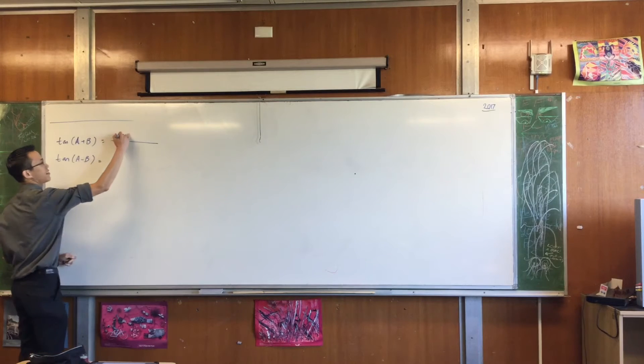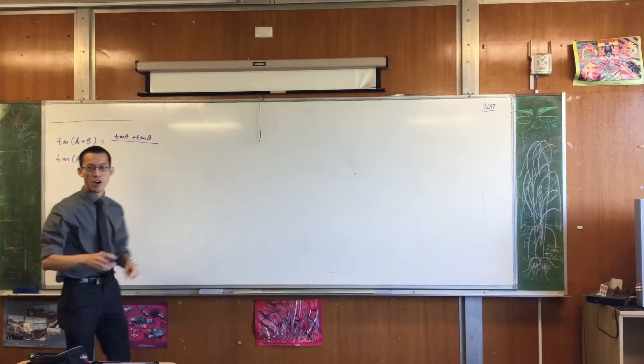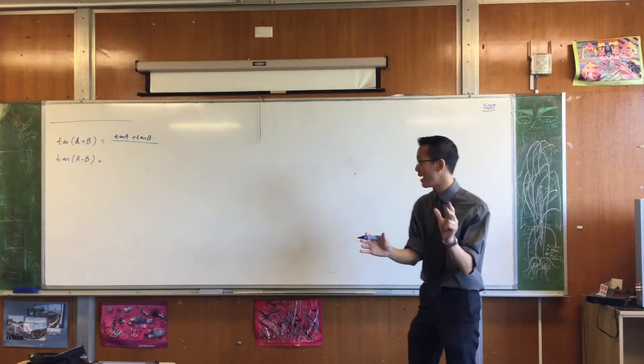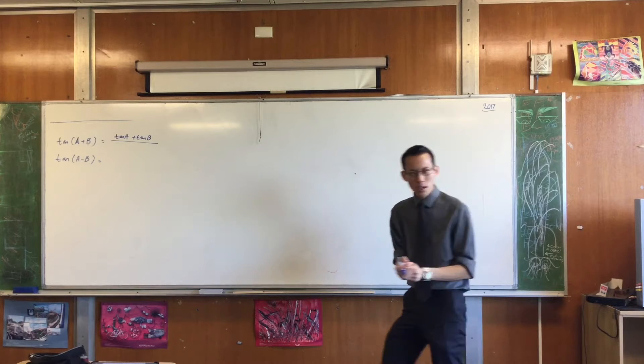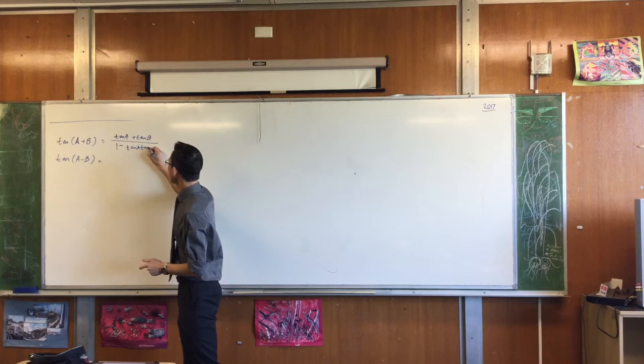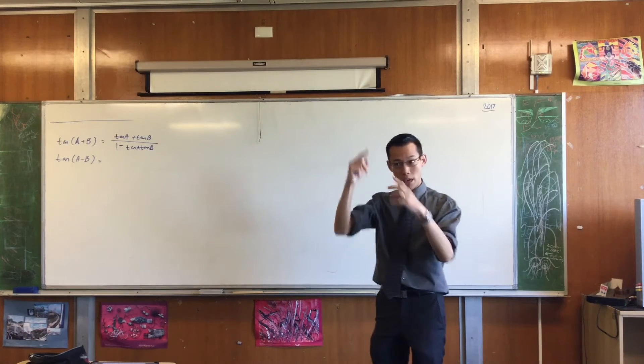Tan A plus tan B. Nice. So, in order to work out tan of A plus B independently, you need to be able to have tan A and tan B. What's the denominator? 1 minus tan A. Excellent. So, you remember as well that there's those signs on the top and bottom, they alternate.